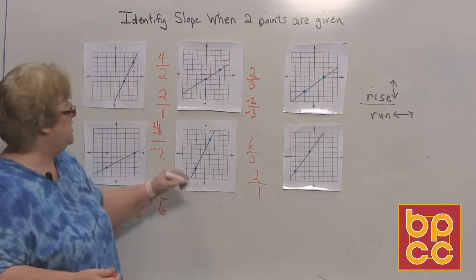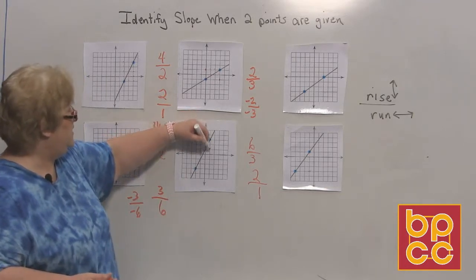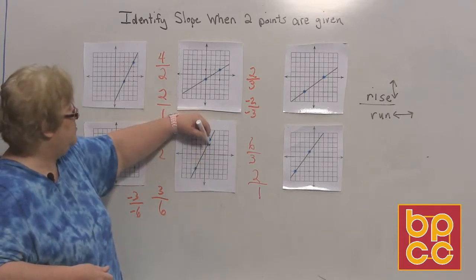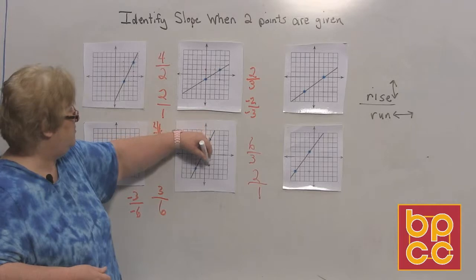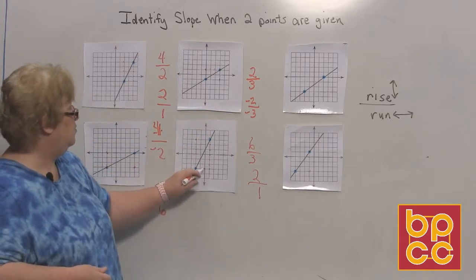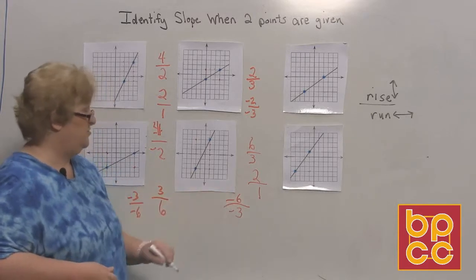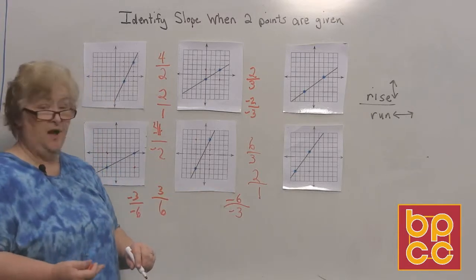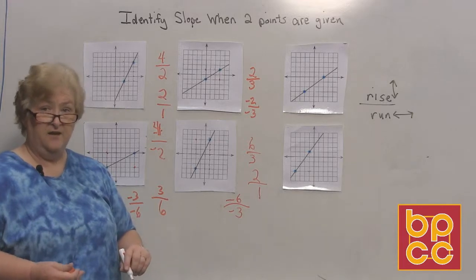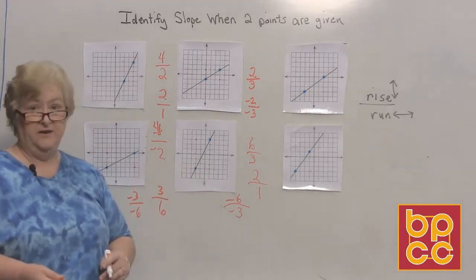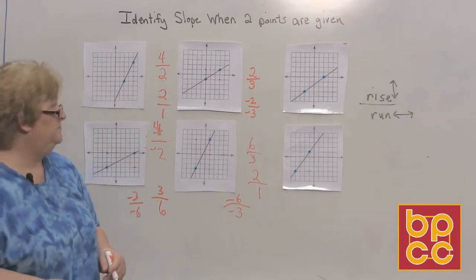All right. And let's go the other direction this time. Let's start here and go down and to the left which is negative negative. 1, 2, 3, 4, 5, 6. And 1, 2, 3, negative 6, negative 3. Two negatives make a positive. So we're still at a positive 2 for slope or a 2 over 1. Any of those would be good answers. All of them will work.